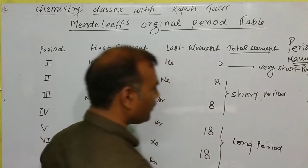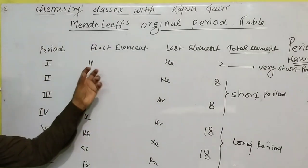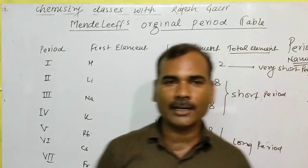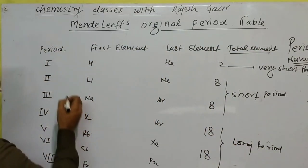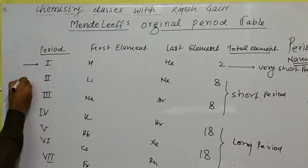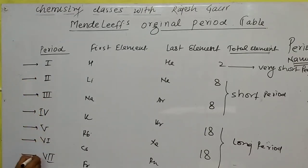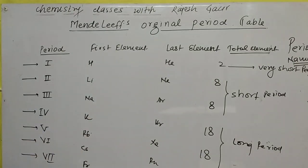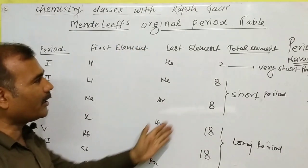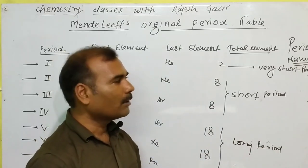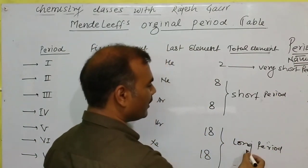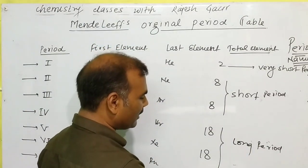The 7th period is incomplete. In Mendeleev's periodic table there are 7 horizontal columns called Periods — 1, 2, 3, 4, 5, 6, 7. The first three are short periods, then long periods, and the last one is incomplete.